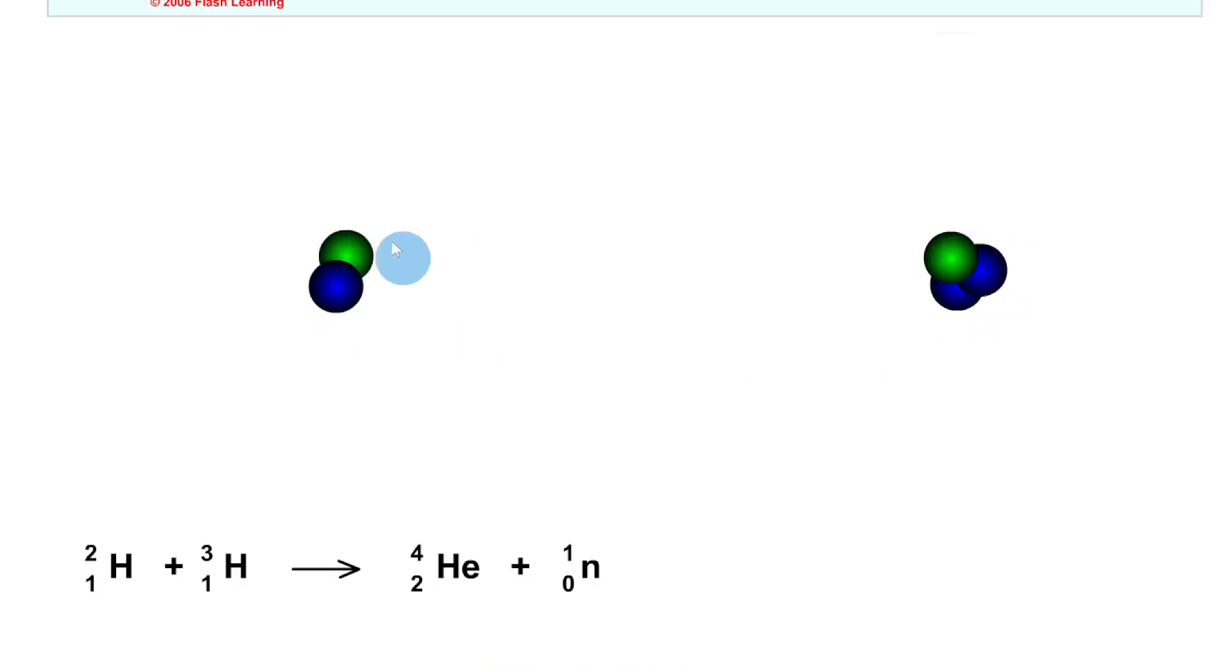hydrogen-3, otherwise known as deuterium and tritium. And if these undergo a nuclear fusion reaction like the one shown here, then that should produce helium plus a neutron. So if we click play, you see the two fuse together